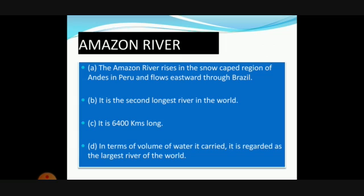The next important point is about the Amazon River — this is a question and answer you have to learn. The Amazon River rises in the snow-capped region of the Andes in Peru and flows eastward through Brazil. It is the second longest river in the world, about 6,400 km long. In terms of volume of water carried, it is regarded as the largest river in the world. The Nile is the longest, and the Amazon is the second longest but the largest by volume.